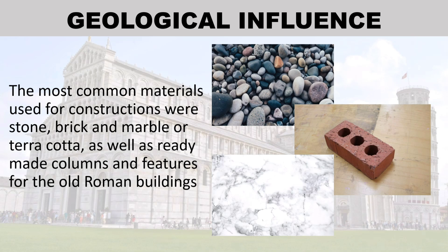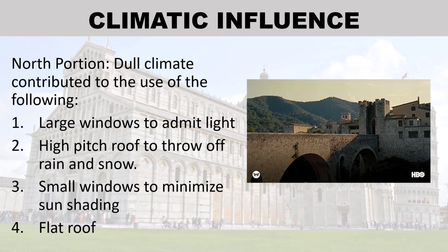Geological influence: The most common materials used for construction were stone, brick, and marble or terracotta, as well as ready-made columns and features from the old Roman buildings.